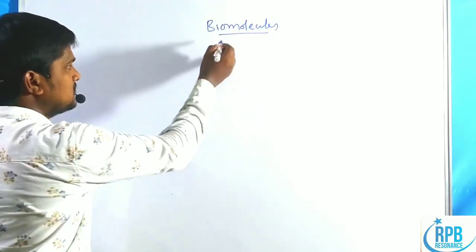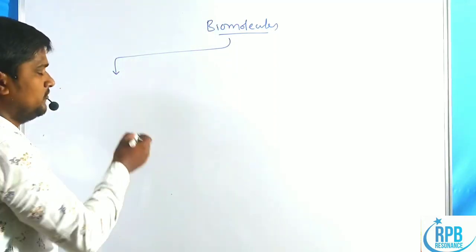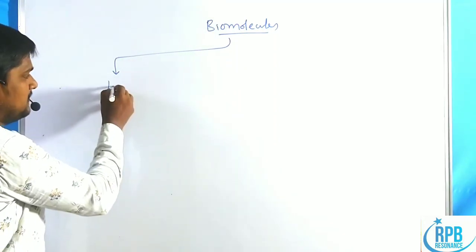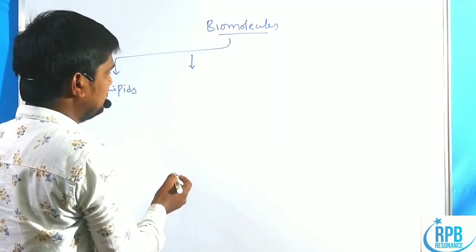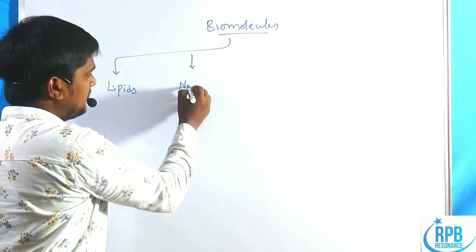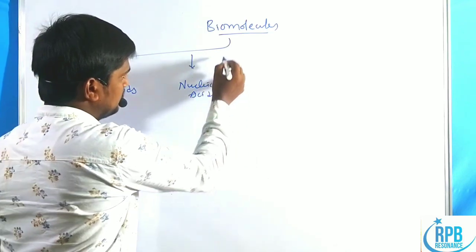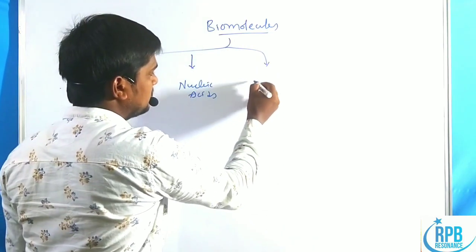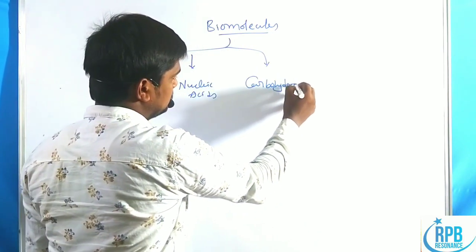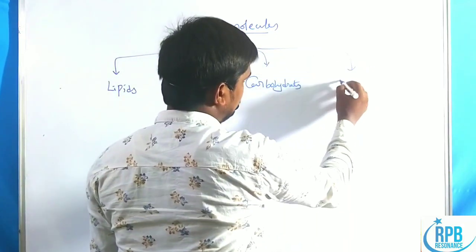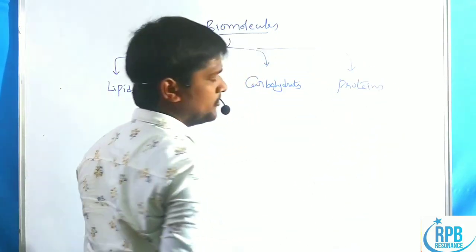Generally, biomolecules are grouped into four categories. The first one is lipids, the second one is nucleic acids, the third one is carbohydrates, and the final one is proteins.